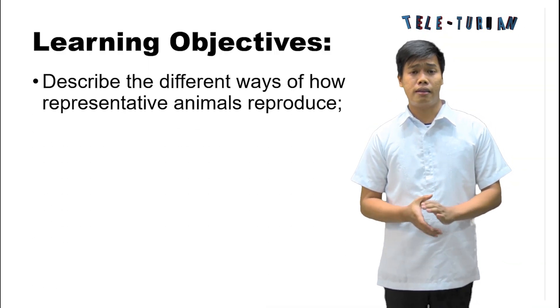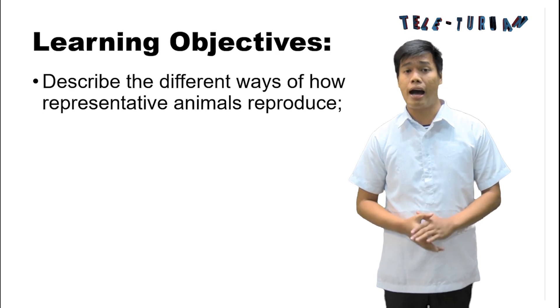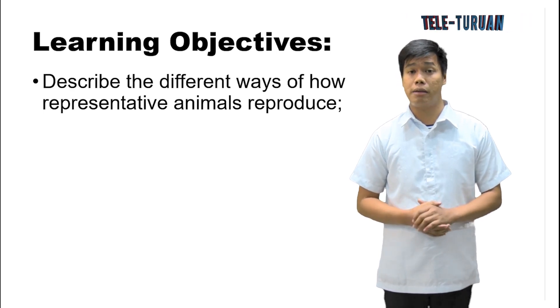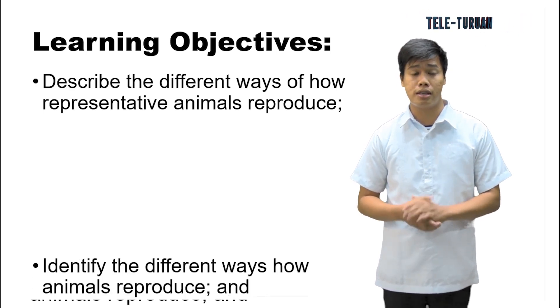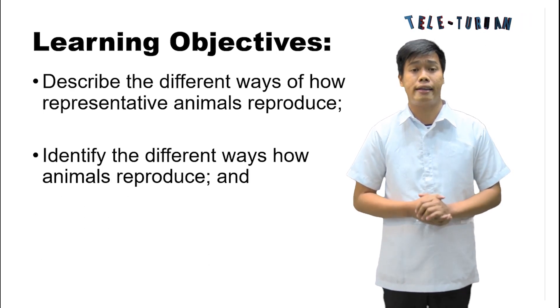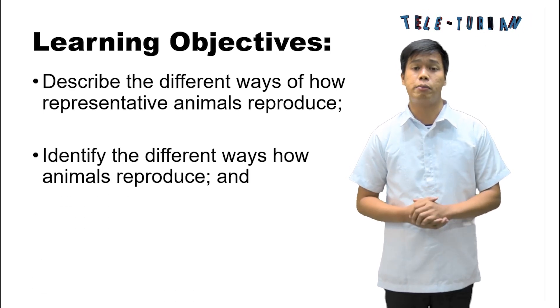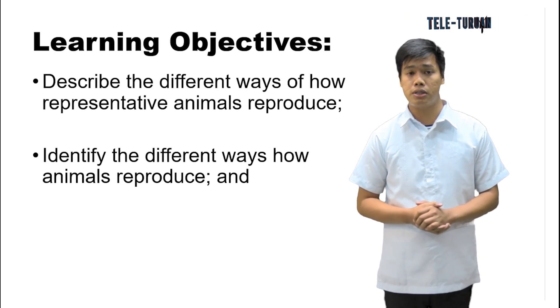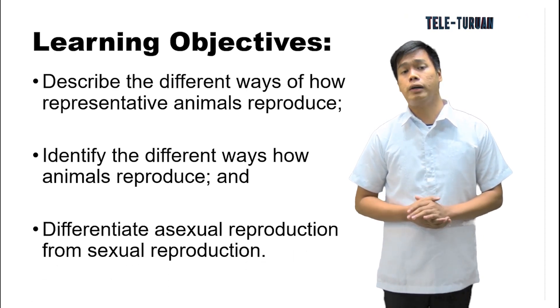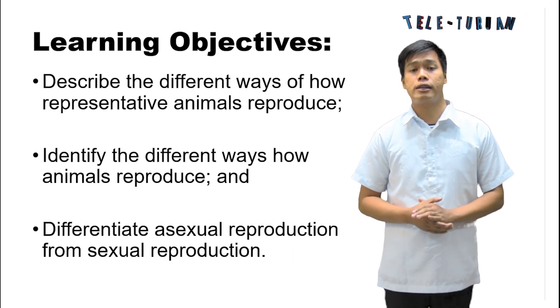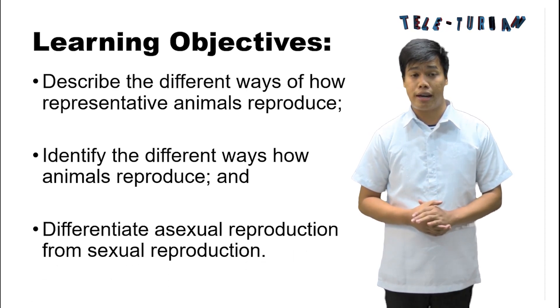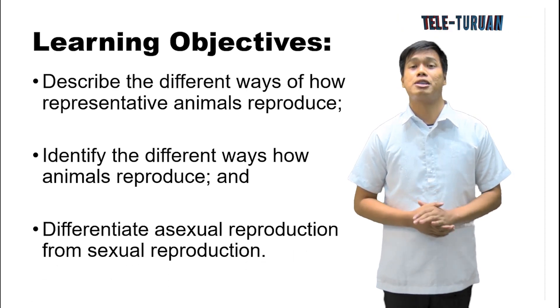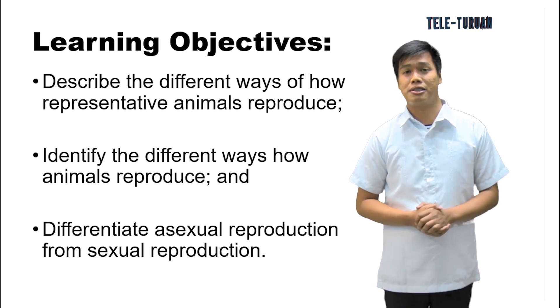First, describe the different ways of how representative animals reproduce. Second, identify the different ways how animals reproduce. And third, differentiate asexual reproduction from sexual reproduction.